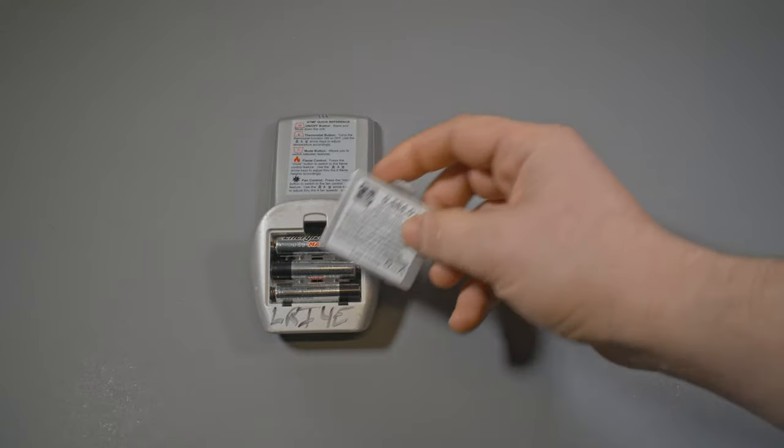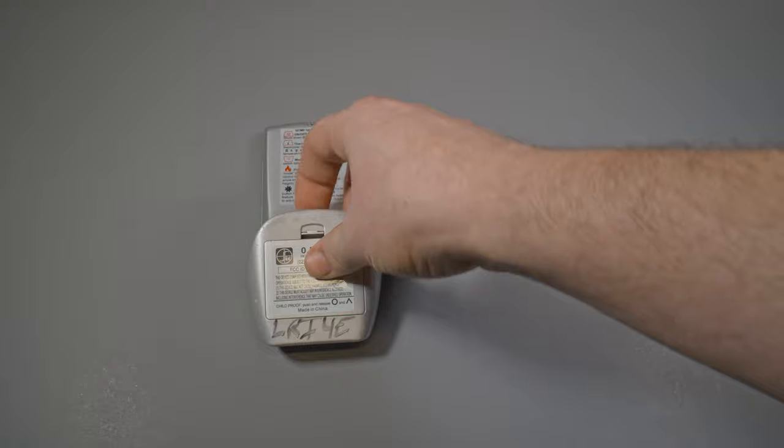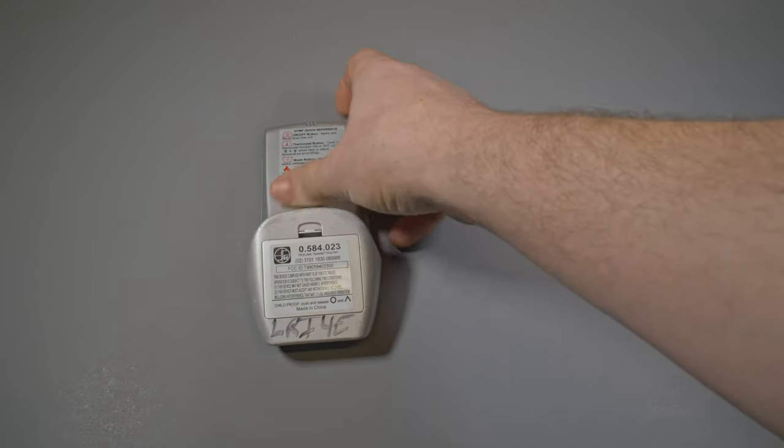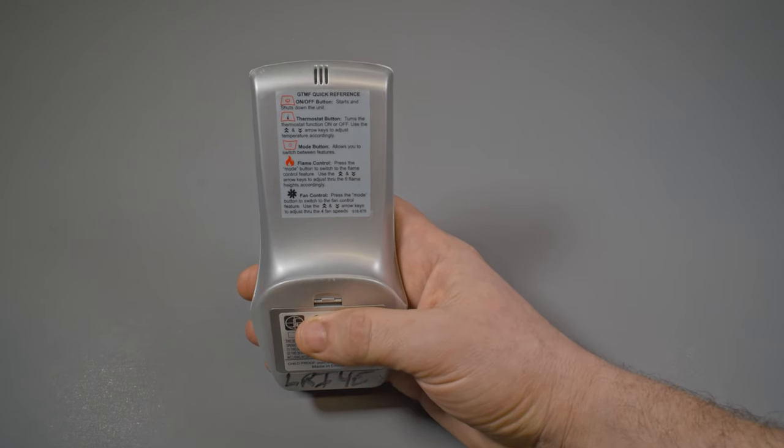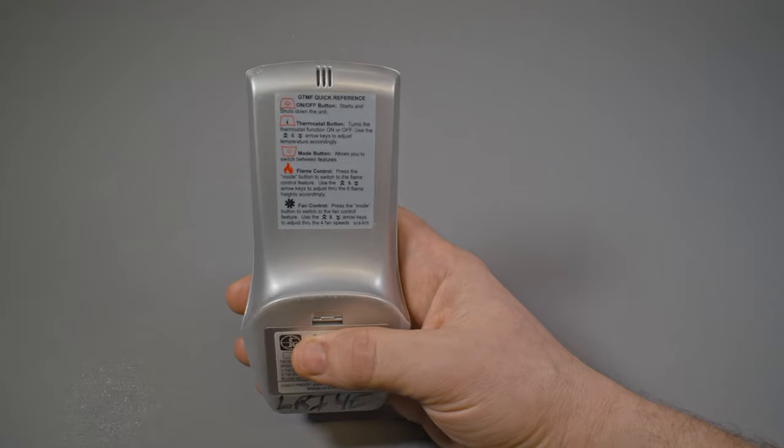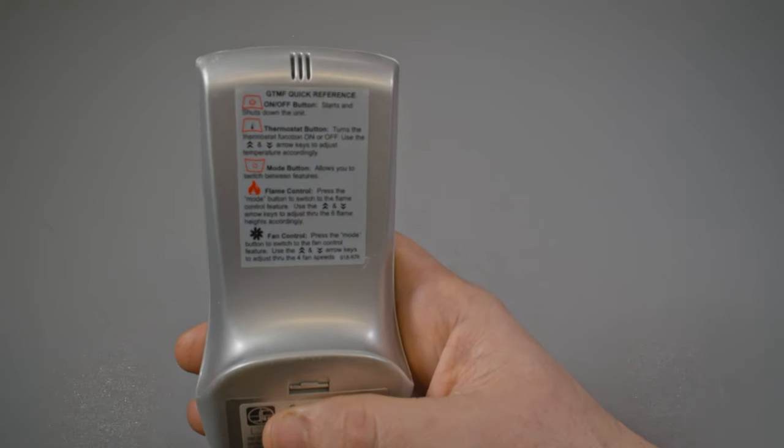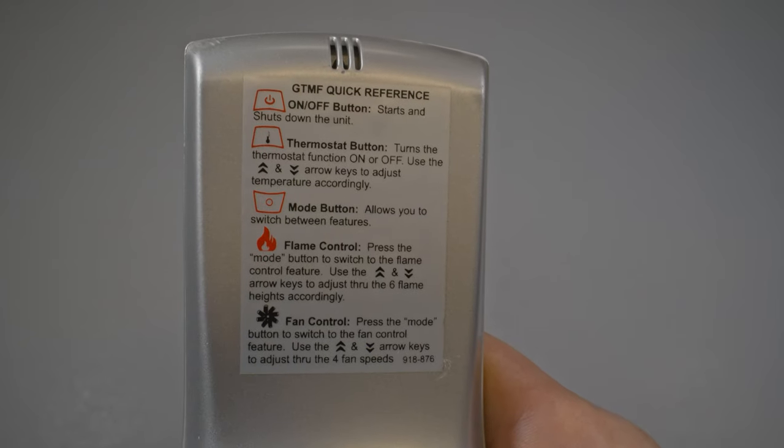And also watch out for corrosion or anything like that in there. Don't leave batteries in there over the summer months if you can. The back of the remote here actually has a little bit of an infographic as well. It gives you definitions for each of the items on the front, each of the buttons. So if you ever get lost, there's a little quick reference right there.